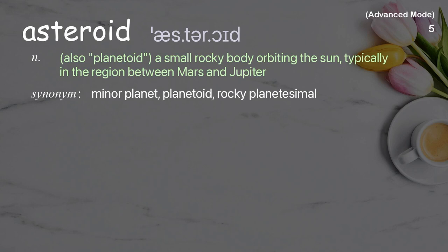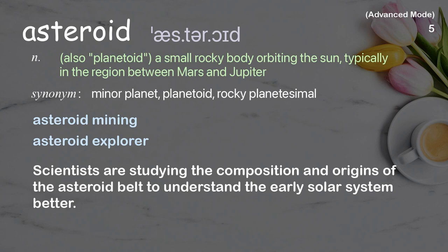Asteroid: Also planetoid, a small rocky body orbiting the sun, typically in the region between Mars and Jupiter. Examples: Asteroid mining, asteroid explorer. Scientists are studying the composition and origins of the asteroid belt to understand the early solar system better.